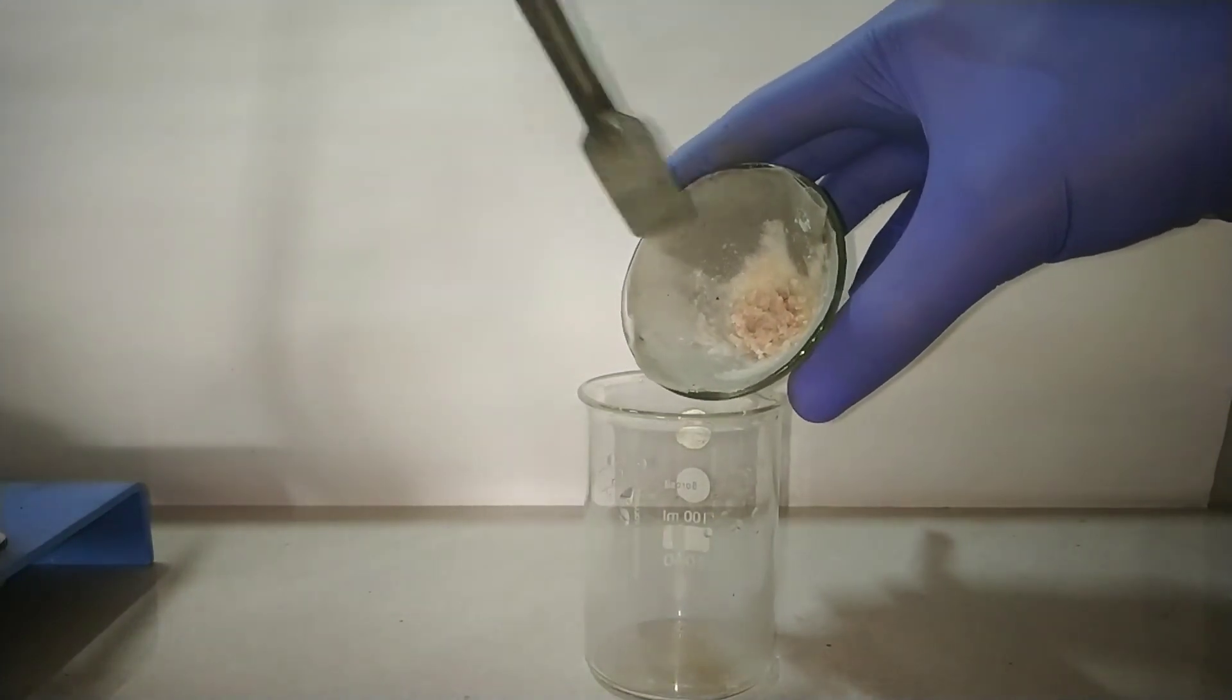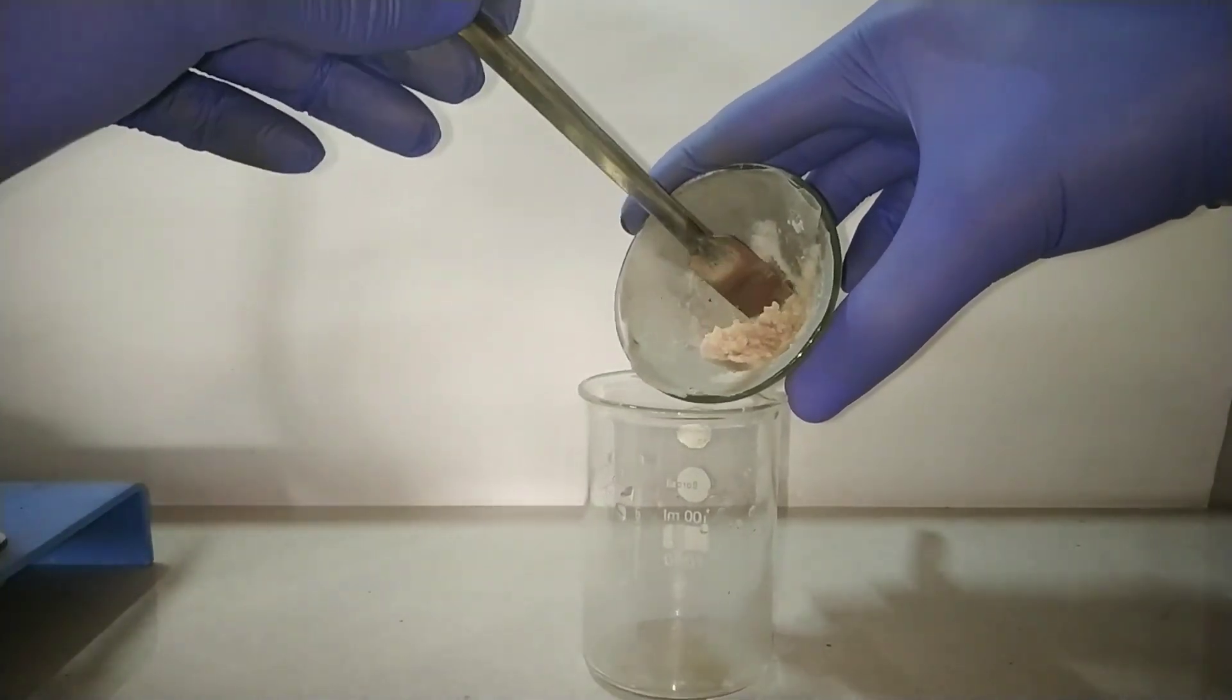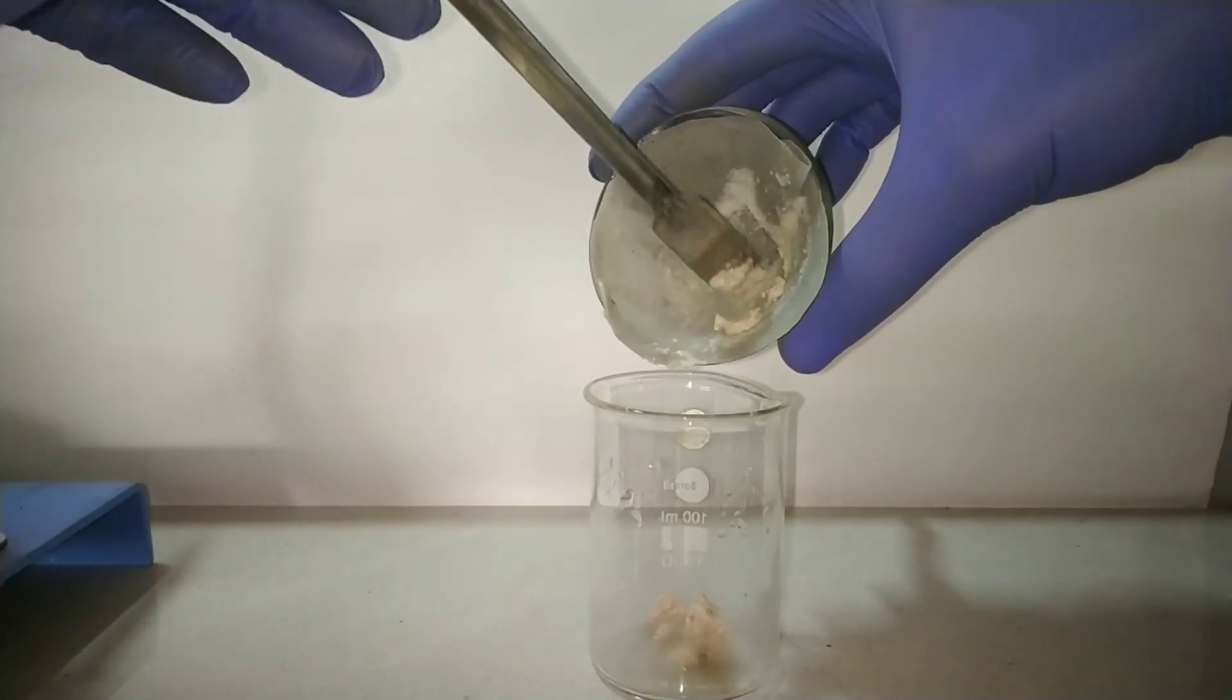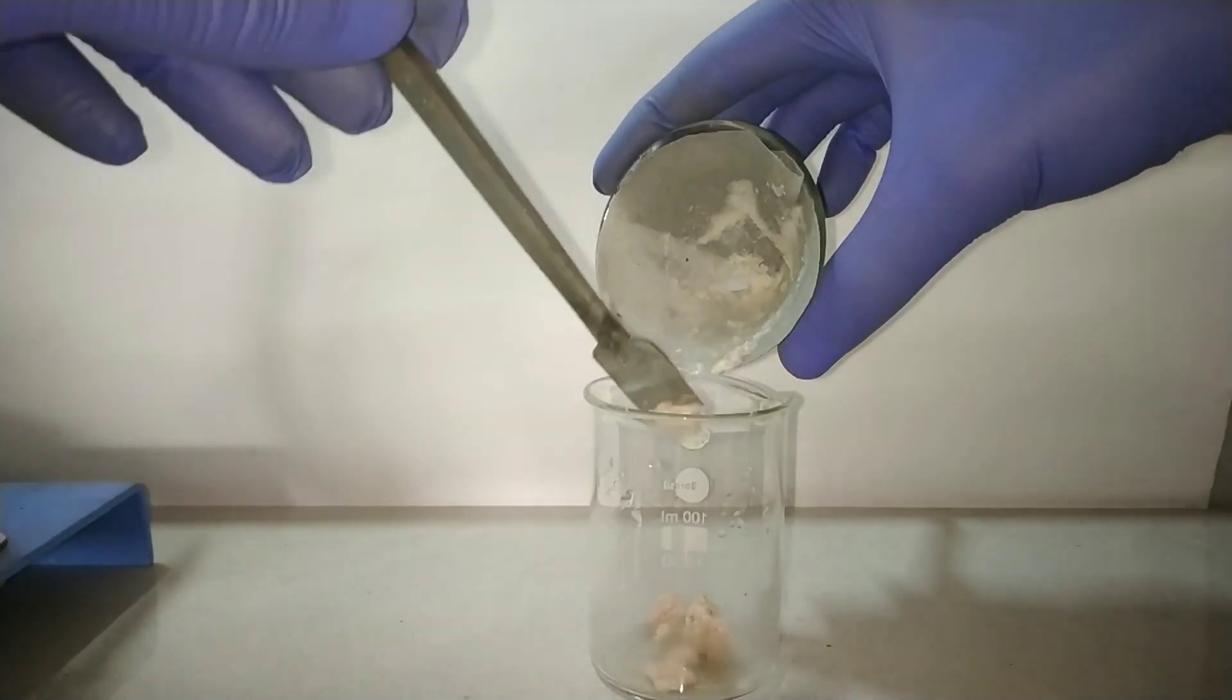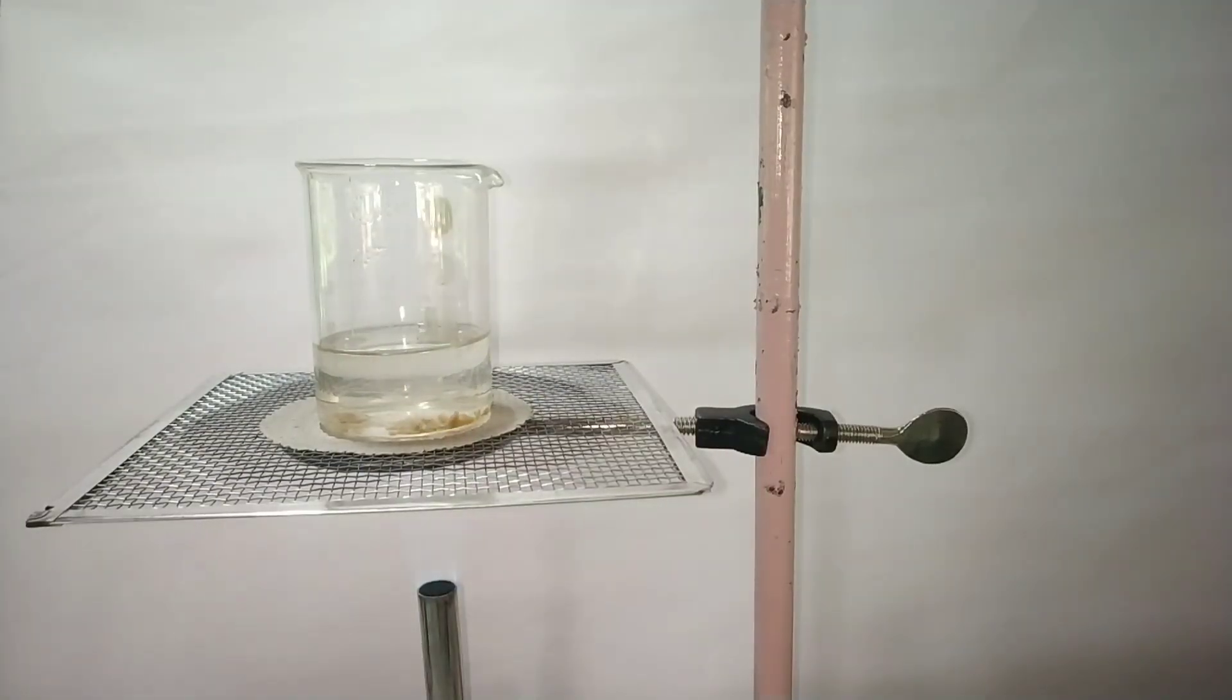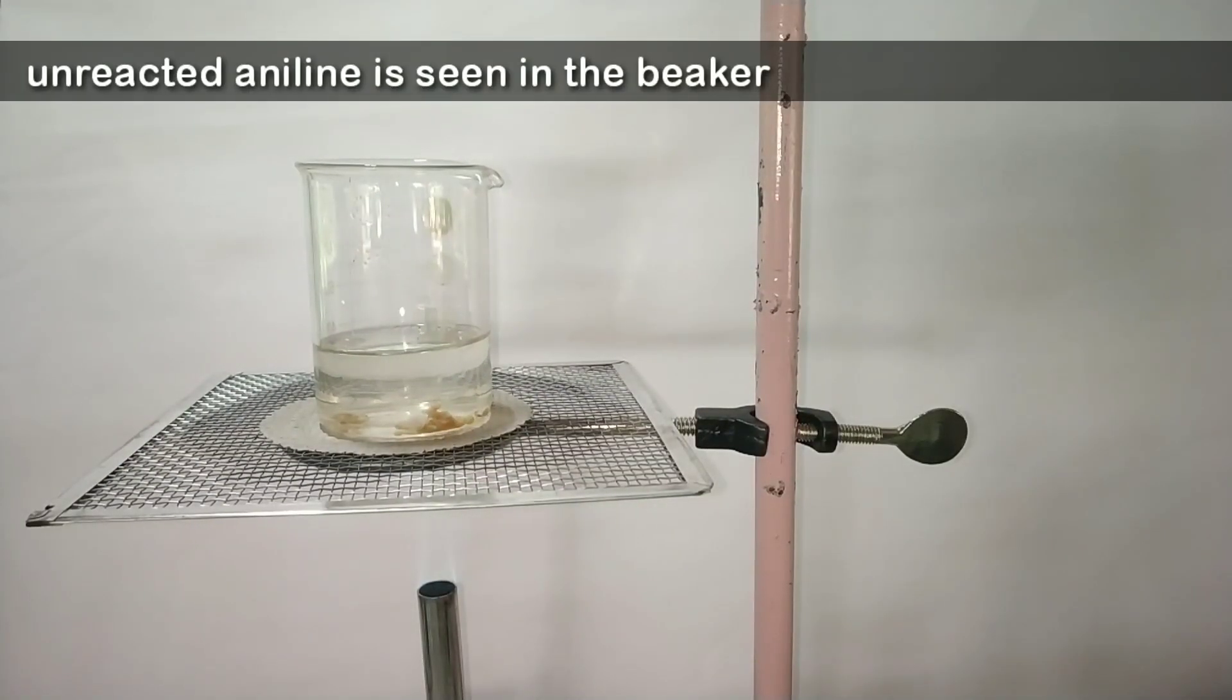I will take it into this 100 ml beaker and then I will be adding distilled water into it and I will heat the solution to boil. On boiling, most of the acetanilide crystals have dissolved.